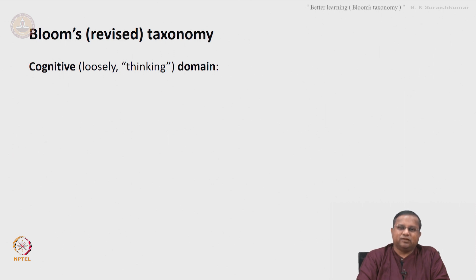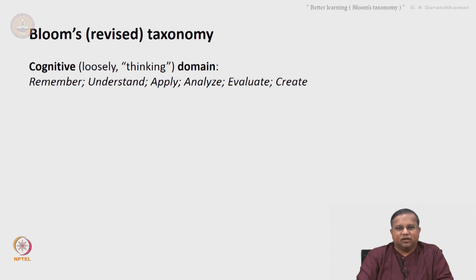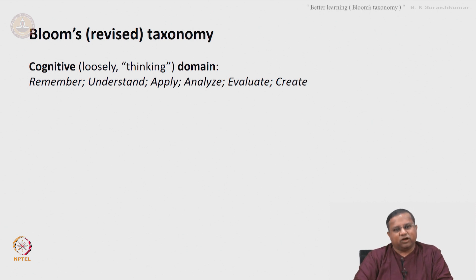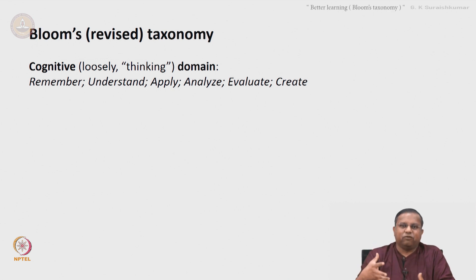The revised taxonomy has three major domains. The first is the cognitive domain — loosely, anything related to the thinking process. The six levels of learning in the cognitive domain are remember, understand, apply, analyze, evaluate, and create. As you go from left to right, the depth of appreciation at the cognitive level increases.